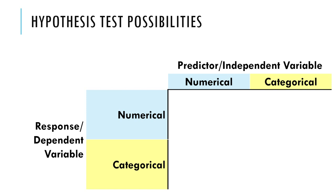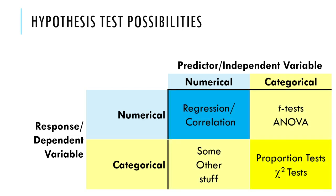Now notice this doesn't explain everything — for one thing it leaves out single sample situations, although you can imagine the first column is the single sample situation because there really wouldn't be a predictor independent variable. So if you've got numerical and numerical variables together, you're going to do regression correlation, which we're going to learn in a couple of weeks.